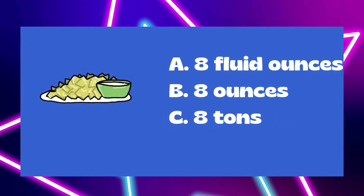The bowl of queso — we've got eight fluid ounces, eight ounces, or eight tons. We're going to get rid of the eight tons for sure. But we might be a bit confused between eight fluid ounces and eight ounces, because they both have the word ounces in them. We just have to remember that fluid ounces refers to capacity and ounces refers to weight. So let's choose A — fluid ounces — because we were talking about filling the bowl with queso.